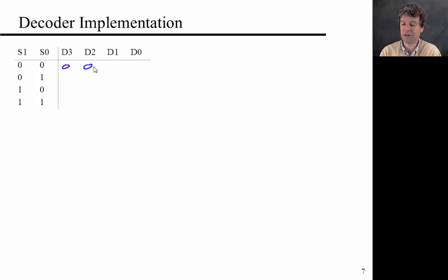It's just going to be 0, 0, 0, 1. So for input combination 0, 0, then wire D0 is active. Then 0, 0, 1, 0. Then 0, 1, 0, 0. Then 1, 0, 0, 0.